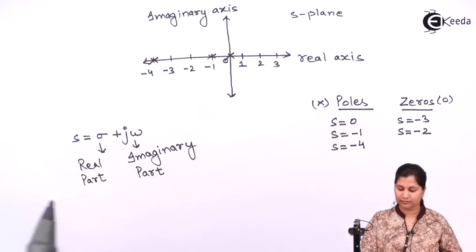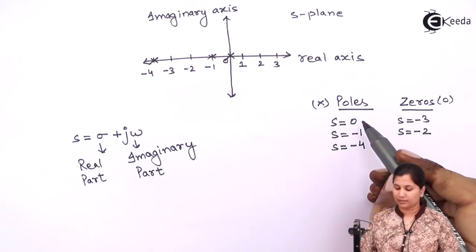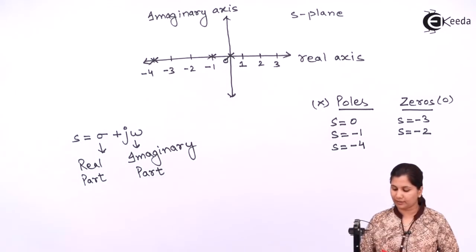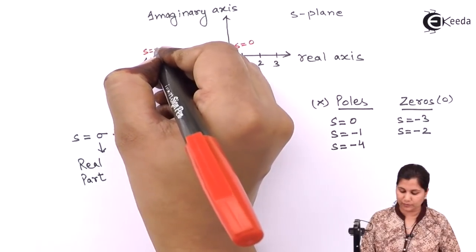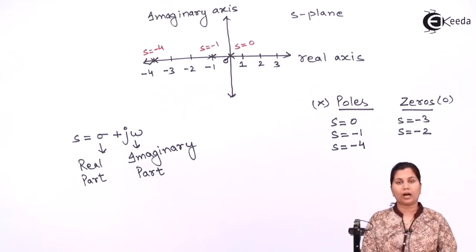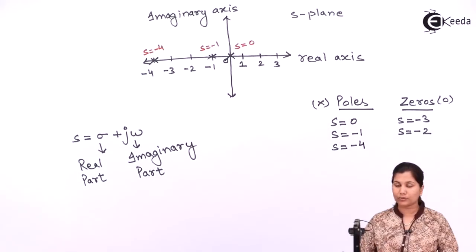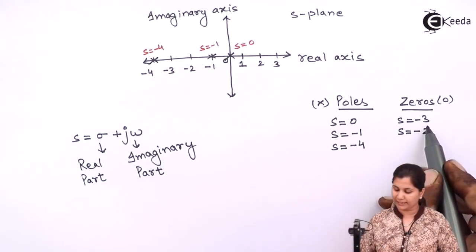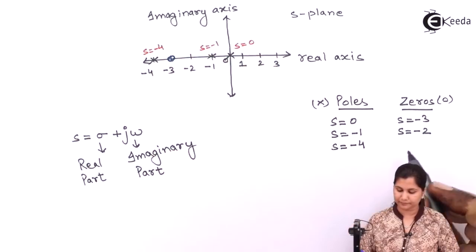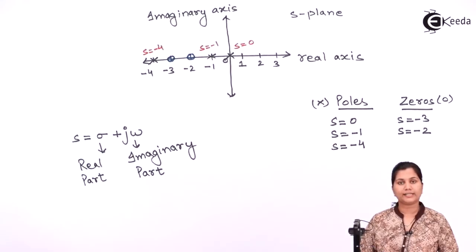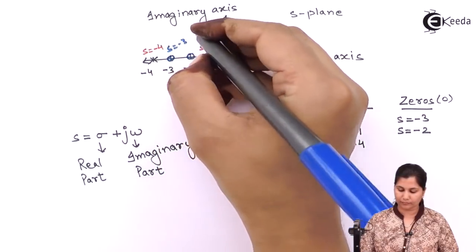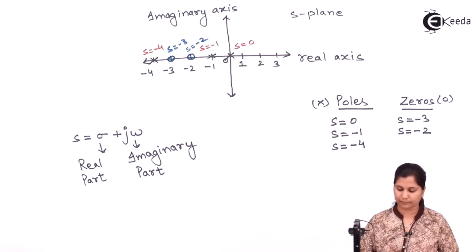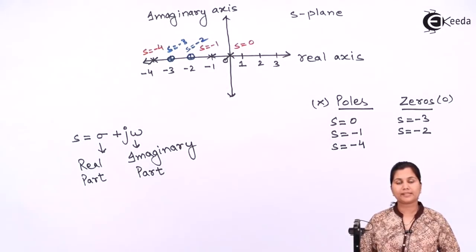These are the poles of the system given in the question: s = 0, s = -1, and s = -4. Now we represent the zeros of the system: s = -3 and s = -2. These are the two zeros of the system. In this way, you can represent the poles and zeros of a system on the s-plane.